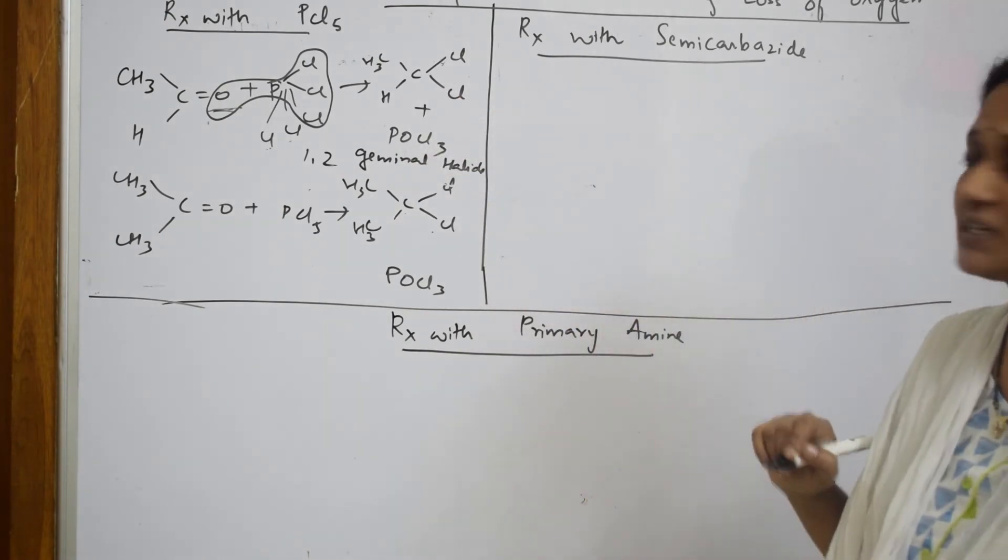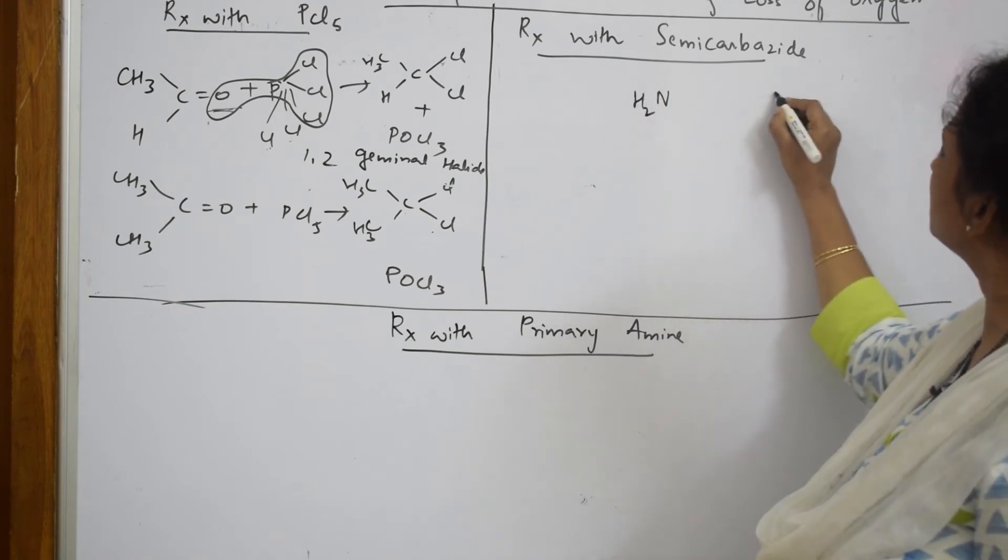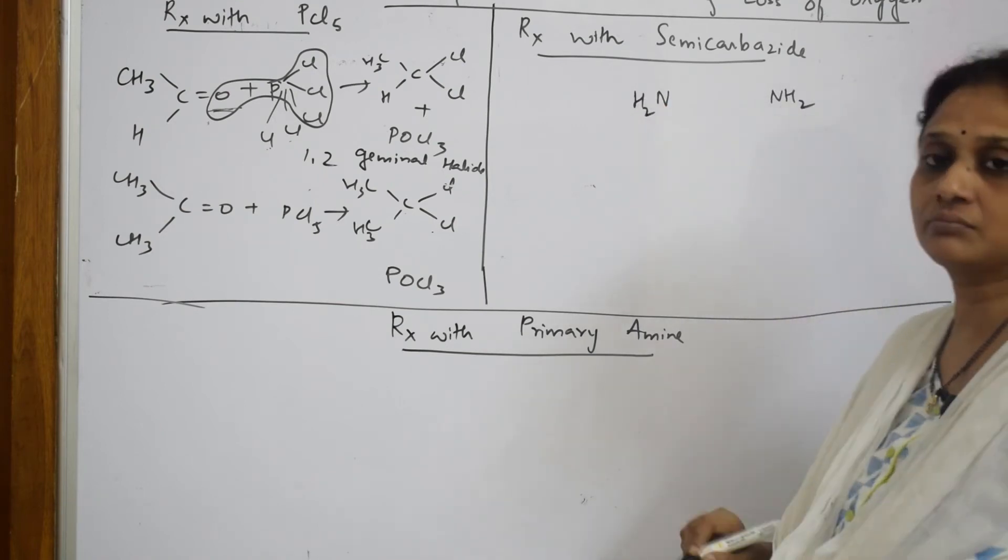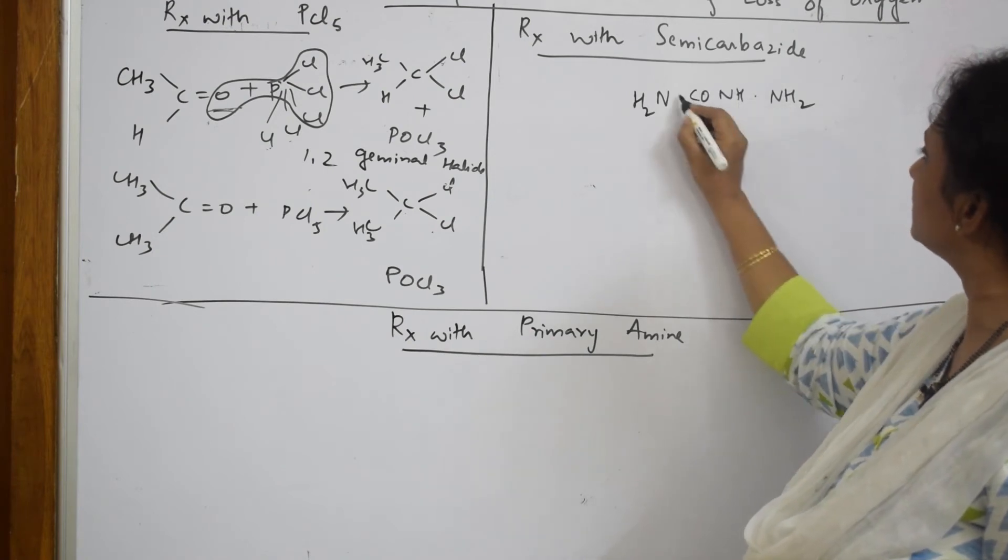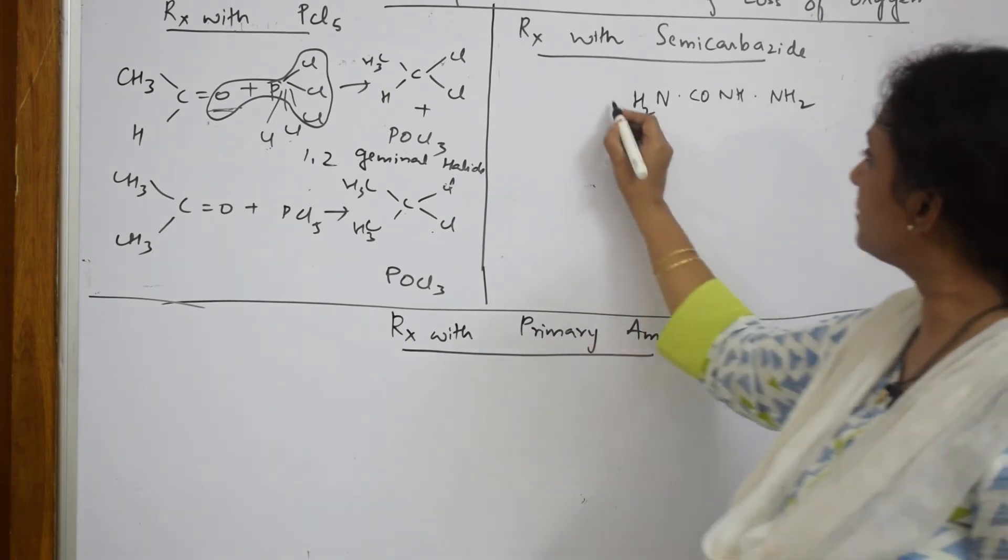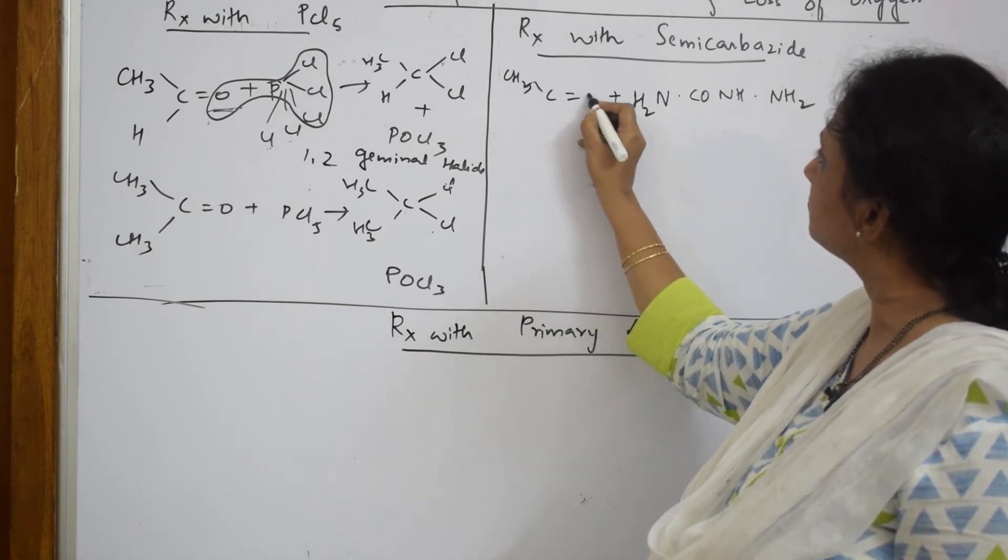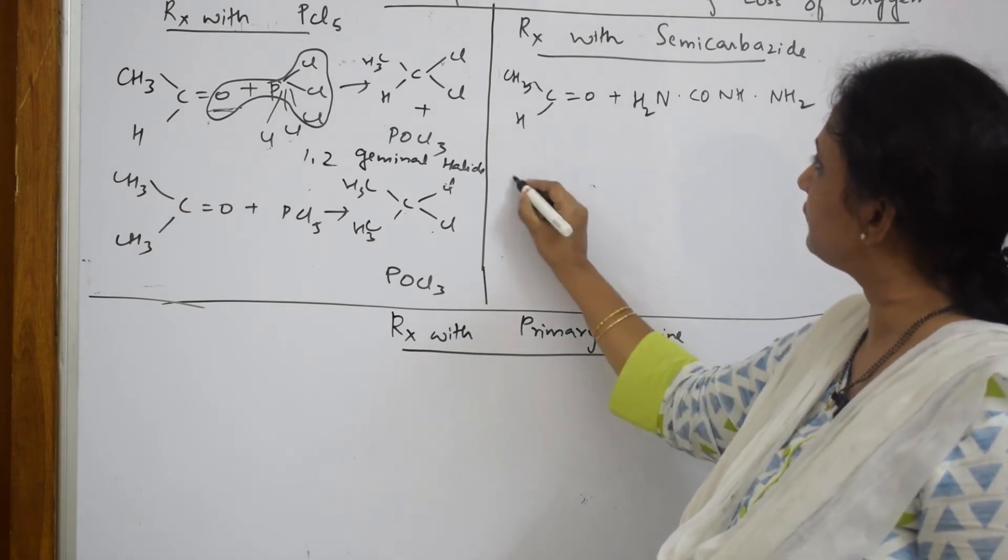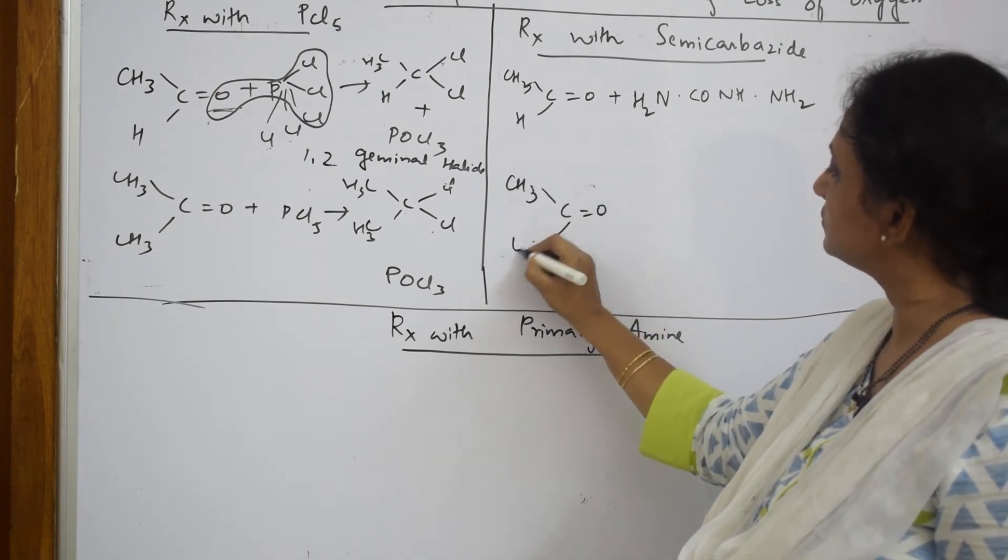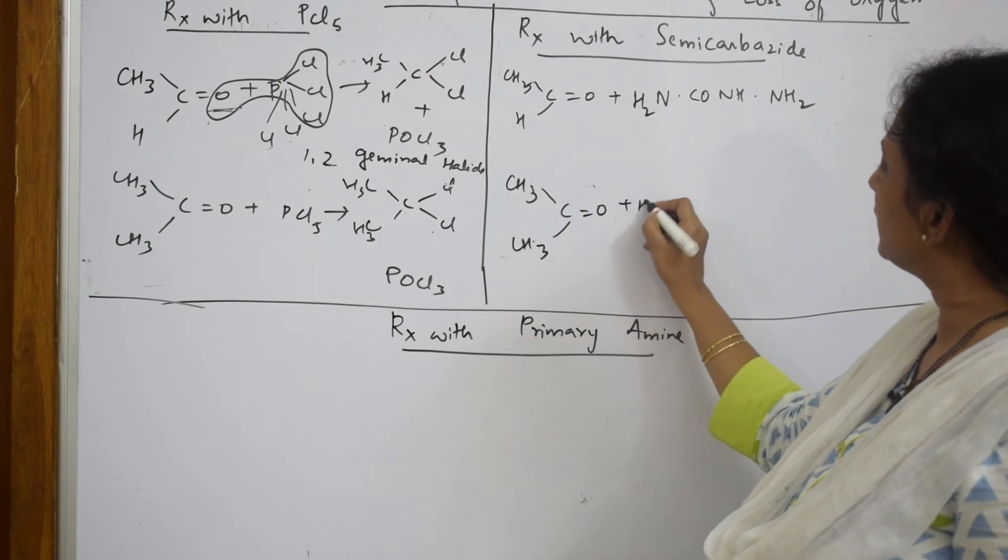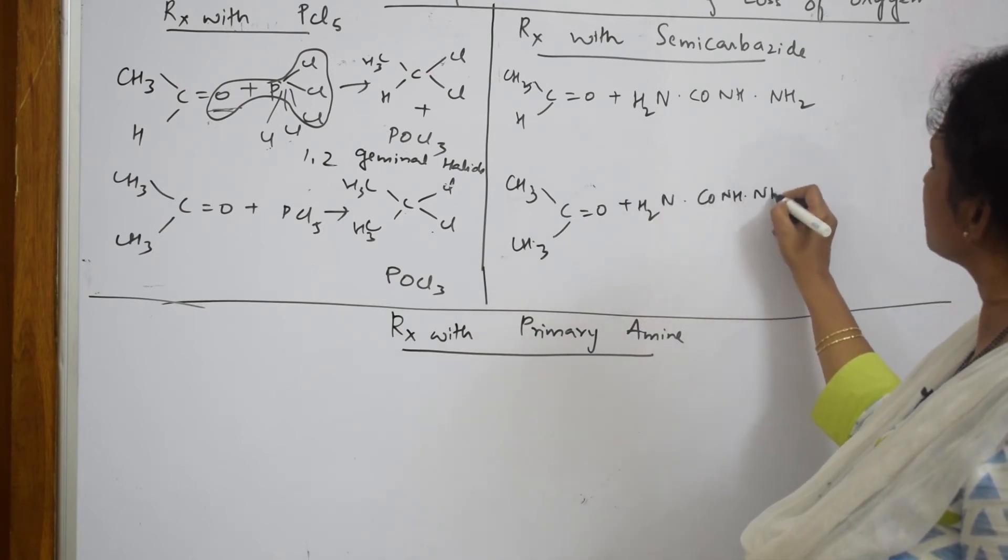Now let us speak about semi-carbazide. What is semi-carbazide formula? Semi-carbazide is NH2 on both sides. In the center, you have CO and NH. Remember, this is semi-carbazide. Now, if I am going to add semi-carbazide to your aldehyde H, if you are adding semi-carbazide to your ketone CH3, I am going to add H2N-CO-NH-NH2.